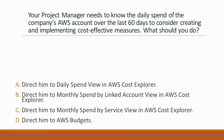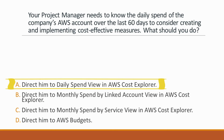Next question: Your project manager needs to know the daily spend of the company's AWS account over the last 60 days. What should you do? Options: A. Direct him to daily spend view in AWS Cost Explorer, B. Monthly spend by linked account view, C. Monthly spend by service view, D. AWS Budgets. Correct answer is option A, because Cost Explorer provides pre-configured views for common spends. For daily spend over the last 60 days, use the daily spend view. AWS Budgets is for generating automatic alerts when costs exceed thresholds, not for tracking spend.